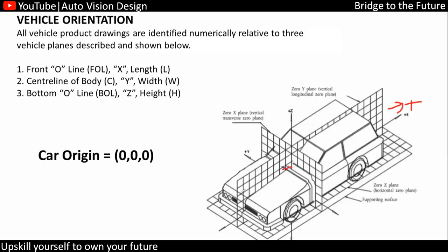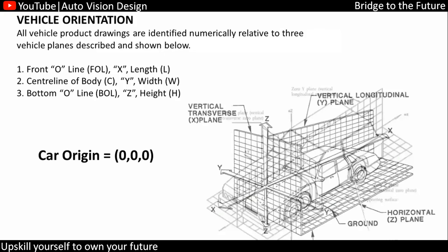In this condition, X will be positive on one side and negative on the other side. Y will be positive or negative depending on LH or RH orientation. Z upside will be positive and downside will be negative. So this is the XYZ plus or minus convention for the vehicle.